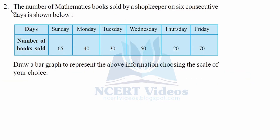Question two. The number of mathematics books sold by a shopkeeper on six consecutive days is given. The days are consecutive — next days and next-to-next days — that is, days in a week, with the number of books sold. Draw a bar graph to represent the above information.